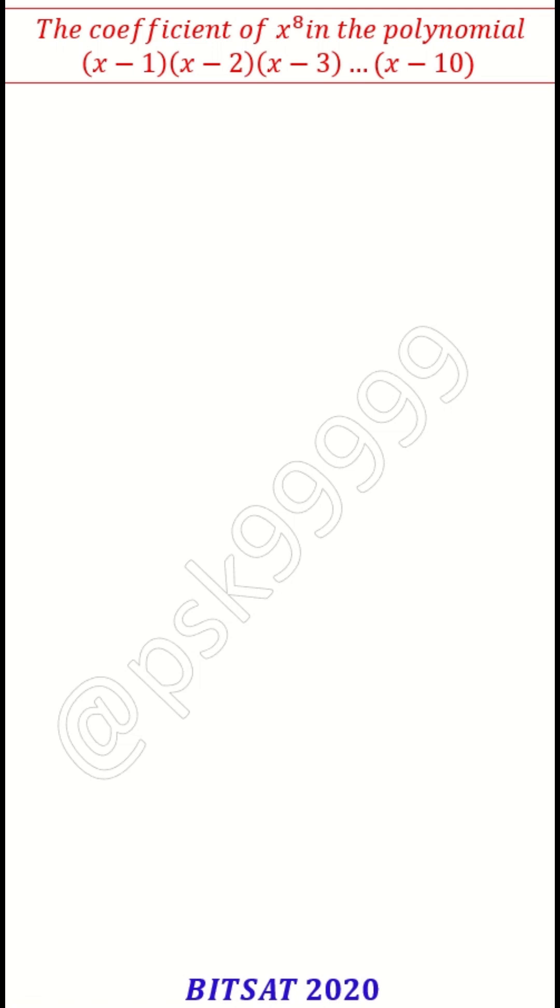We know that if you really multiply these terms and then expand it, x to the power 8 requires the product of 8 x's. So x from each of these 8 times, then other two we should not pick the x but the product of the numeral part.